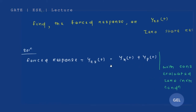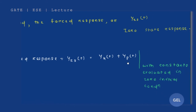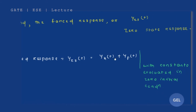Now let's solve each solution carefully. First we'll take the homogeneous solution, then we'll go for the particular solution, then we'll sum both of these solutions to get the zero state response.